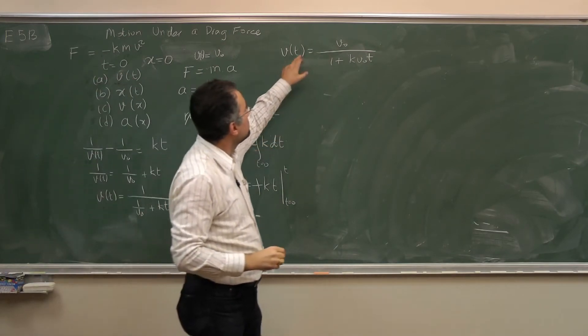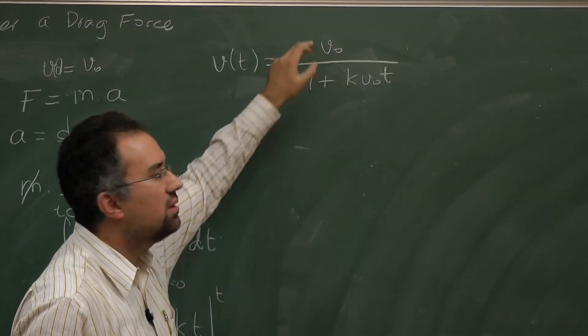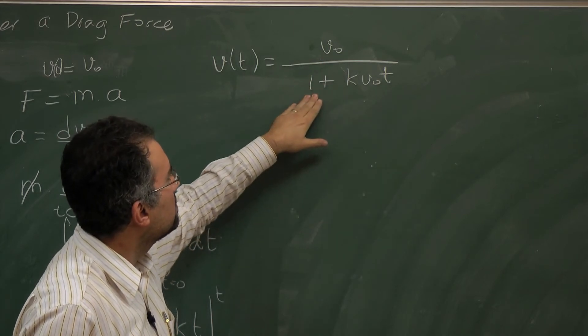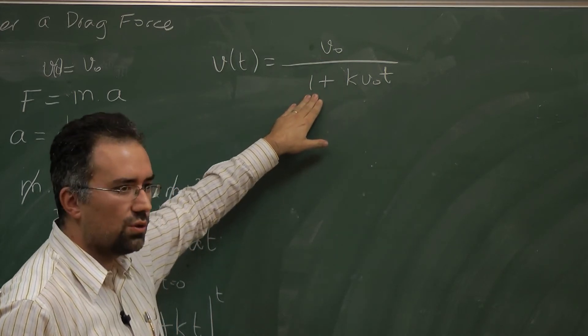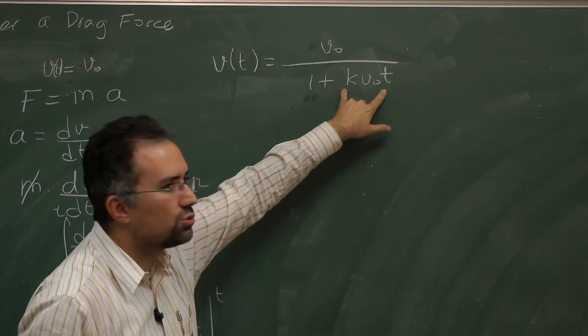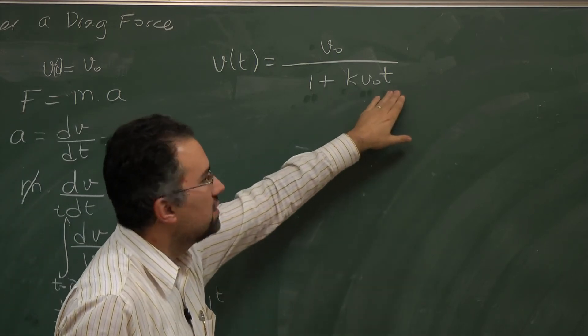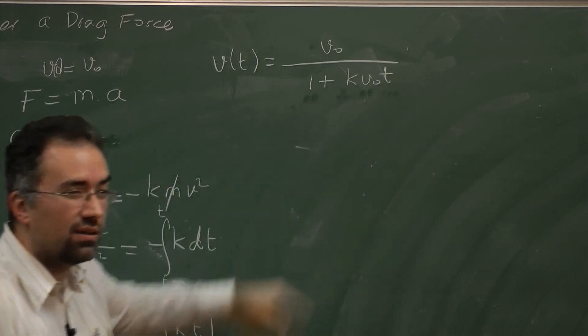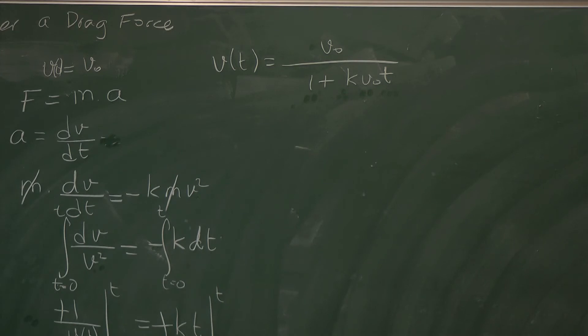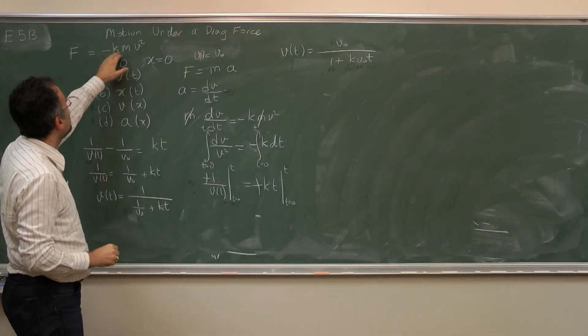Now on top I have a velocity. The denominator must be unitless overall. So this part must also be unitless. Is that true? Well, speed, time, I don't know k, the units of k. The units of k I can find from here.